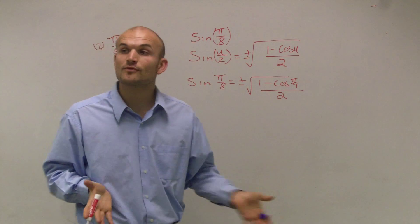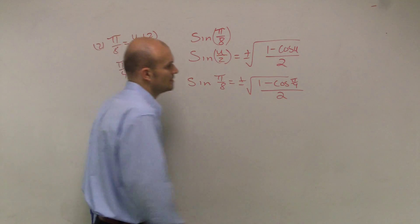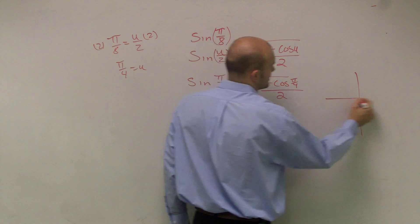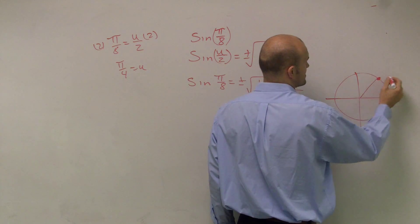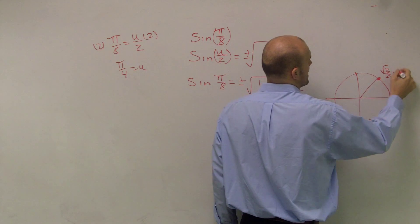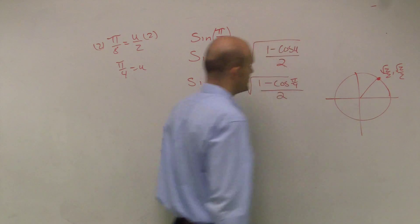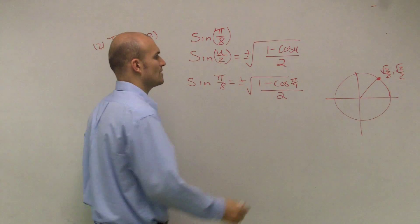So now what I need to do is evaluate what is the cosine of pi over 4. We go ahead and look at this, take a look at our unit circle. Pi over 4 is going to get us somewhere there: radical 2 over 2 comma radical 2 over 2. Therefore, the cosine is going to be a positive radical 2 over 2.